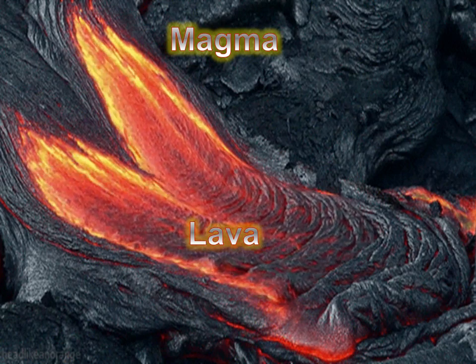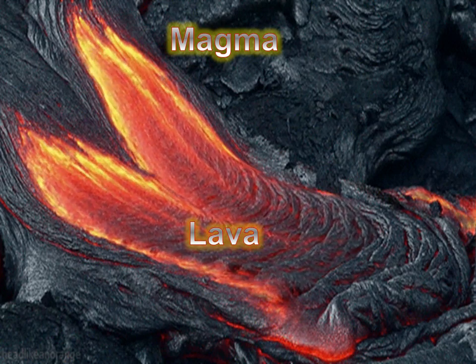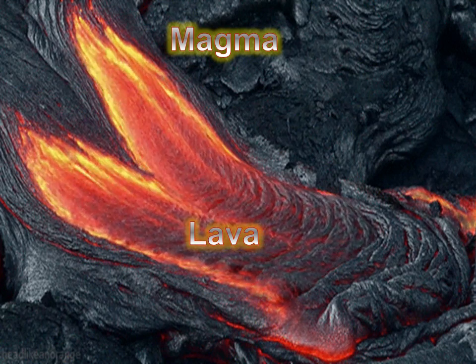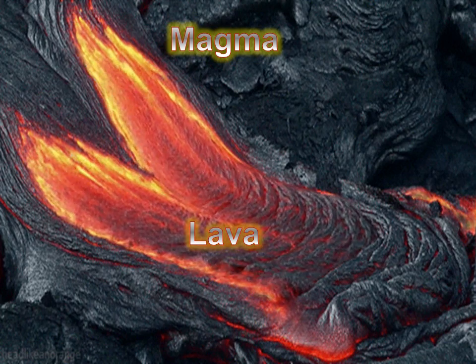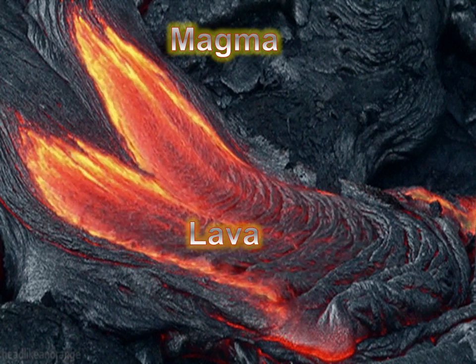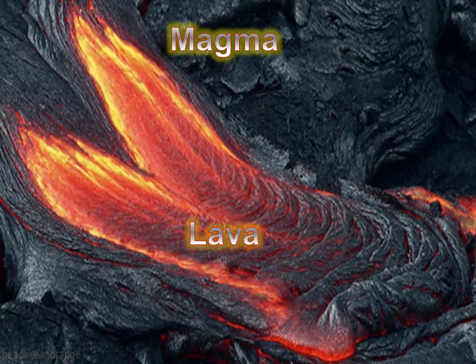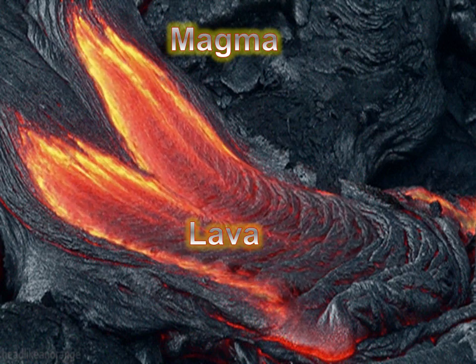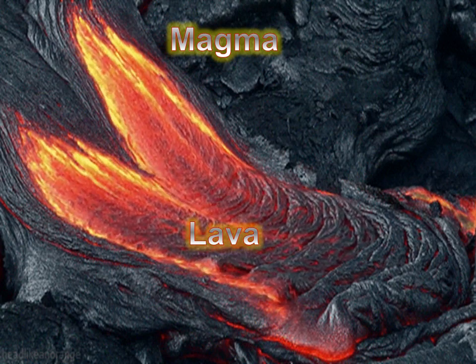During a volcanic eruption, lava and ash can spread over a wide area. An eruption can also cause floods, landslides, and a tsunami, which are huge ocean waves.